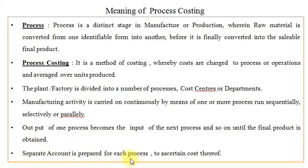A separate account is prepared for each process to ascertain the cost thereof, and that is known as a Process Account. Manufacturing activity in a process carries on continuously, sequentially, selectively or parallelly, and output of one process becomes the raw material or input for the next process till the final product is obtained. To ascertain the cost of a process, a separate account is prepared known as a Process Account.